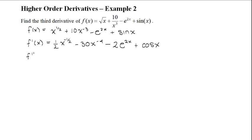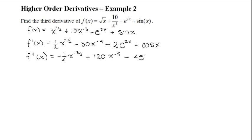Now we can start with the second derivative. Be careful because with negative powers the signs are going to change. For the first term, 1 half times negative 1 half is negative 1 quarter, and the power becomes negative 3 over 2. For the next term, negative 30 times negative 4 is positive 120 times x to the power of negative 5. For the third term, using chain rule again: 2 times e to the 2x multiplied by the derivative of 2x gives minus 4 times e to the 2x. For the last term, the derivative of cos x is negative sin x, so this turns into minus sin x.